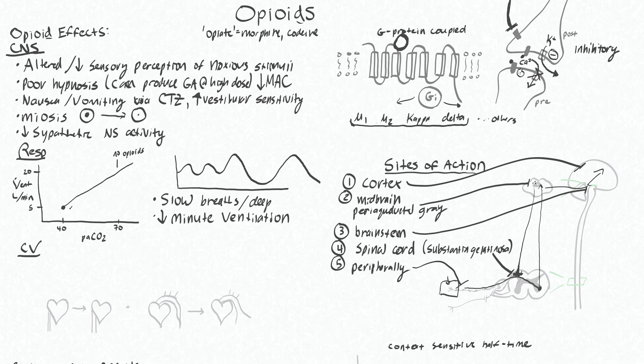When we give someone an opioid, what we're doing is shifting this whole curve to the right. So instead of having the drive to breathe five liters per minute with a Pa CO2 of 40, maybe you'll need a Pa CO2 of 60 in order to be breathing at five liters per minute.